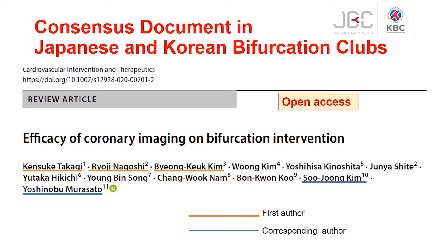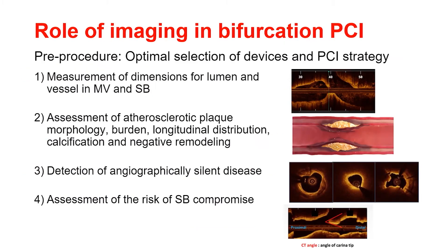Recently, Japanese and Korean bifurcation clubs published a consensus document on coronary imaging in bifurcation intervention. We regard the roles of imaging in bifurcation PCI as follows. In pre-procedure, optimal selection of devices and PCI strategy are important: measurement of dimensions of lumen and vessel in the main vessel and side branch; assessment of atherosclerotic plaque morphology, burden, longitudinal distribution, calcification, and negative remodeling; and detection of angiographically silent disease.